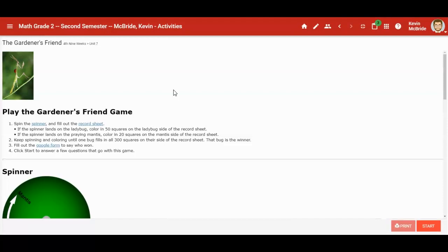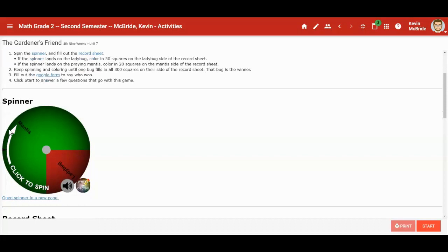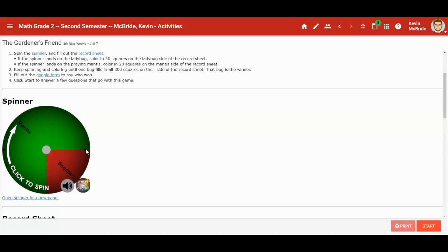Here's how we play. We're going to spin a spinner and fill out a record sheet. You can see this spinner is not quite even - it's much more likely to land on the mantis than the ladybug. But remember, the ladybug eats 50 bugs a day, so the ladybug gets 50 points every time it lands on the ladybug side and the mantis only gets 20 points.